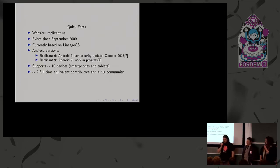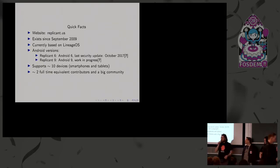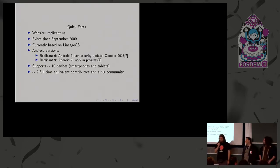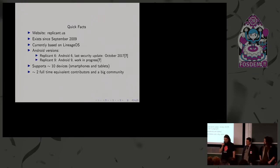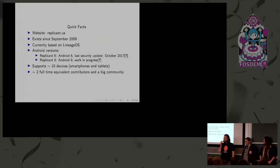We are working on two Android versions at the same time: Android 6, because we support a lot of devices with it — unfortunately the last security update is from October 2017 — and we are also working on porting everything to Android 9, which is still a work in progress today.